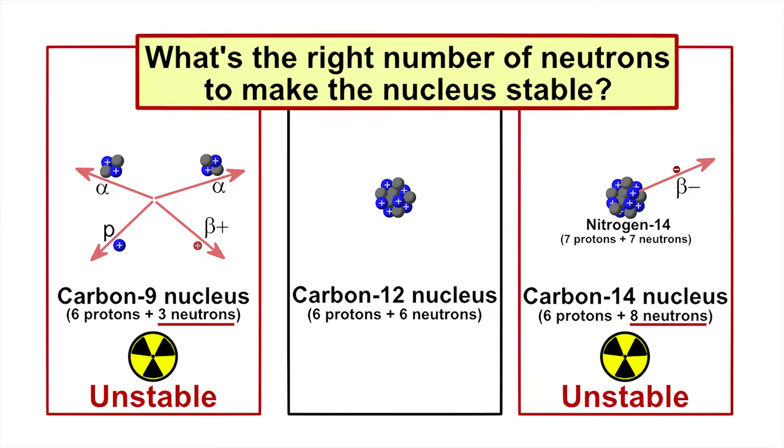What's the right number of neutrons required to make the nucleus of an atom stable? Many stable isotopes have about the same number of neutrons as protons.